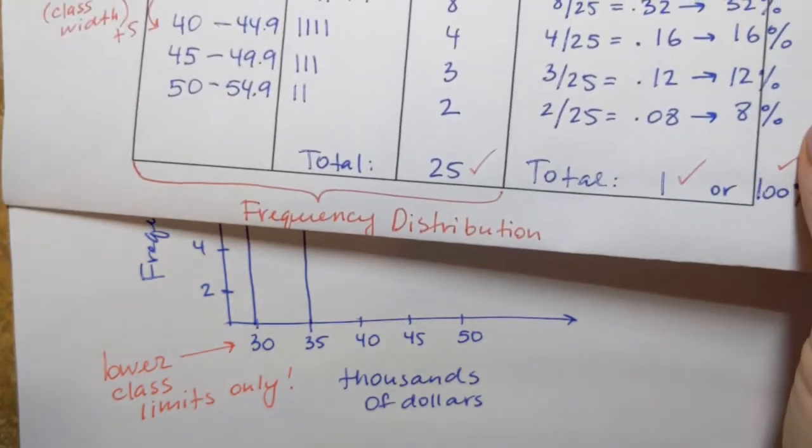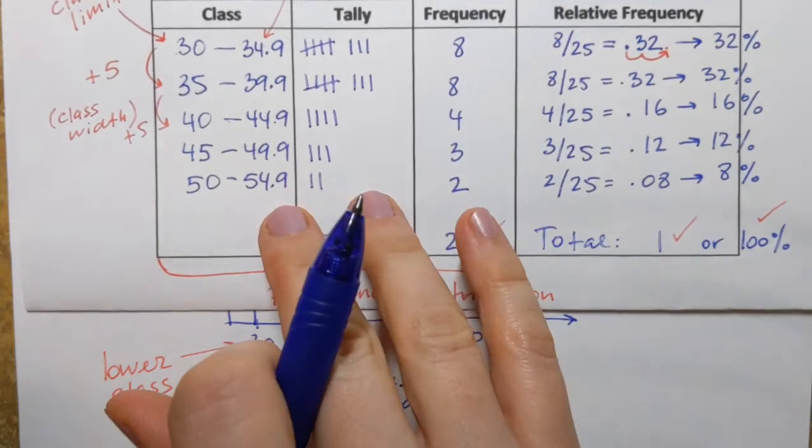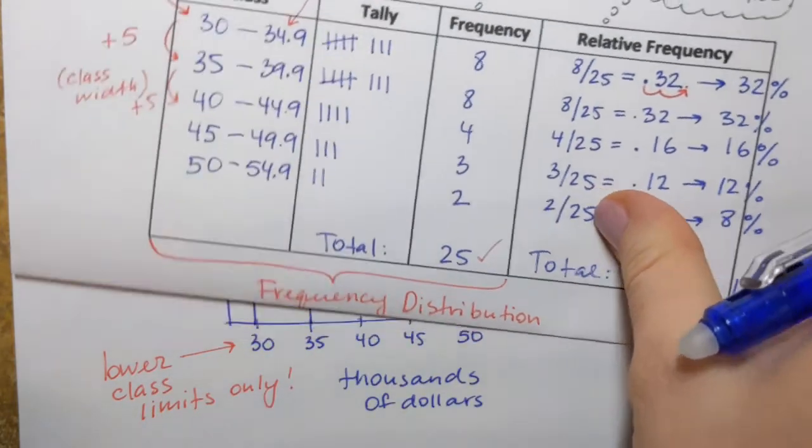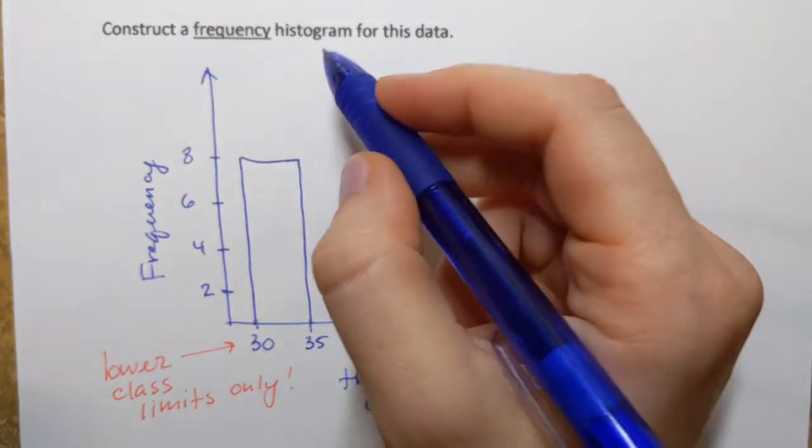And now I'm going to move on to the next class. Its frequency is also 8. Okay, so it means that I'll have another bar like that.